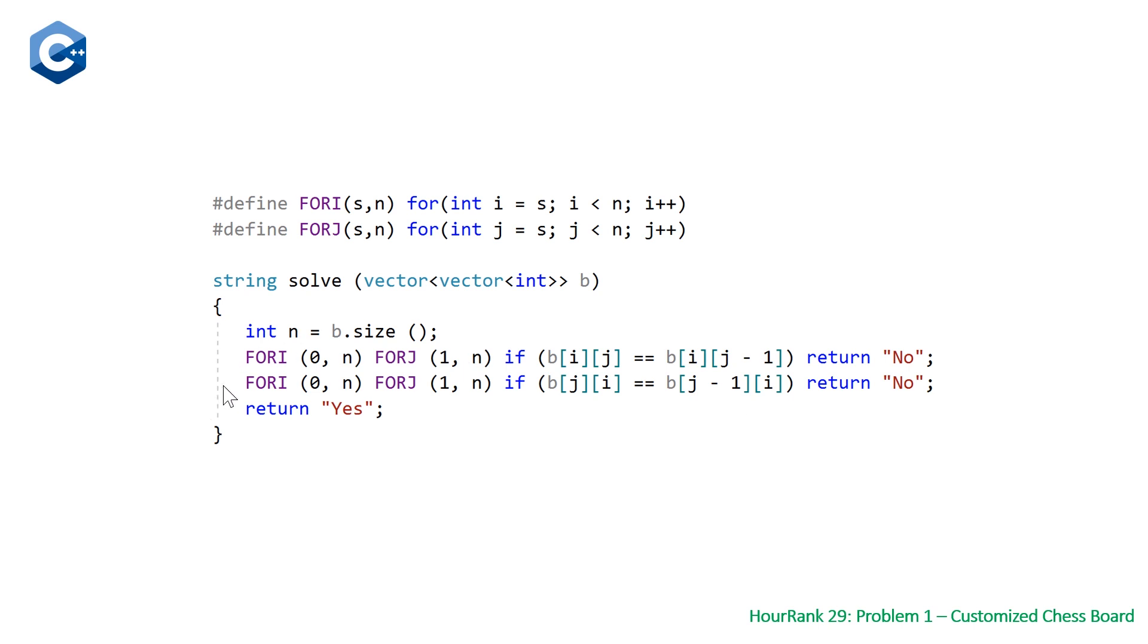And if you can get through these two nested for loops, you know you have a valid board. So you just return yes. So that's all there is to it.